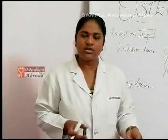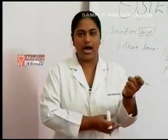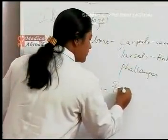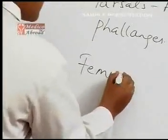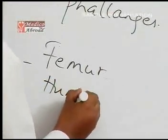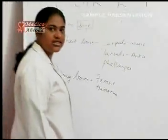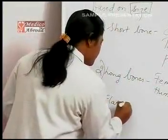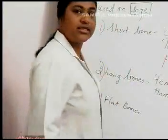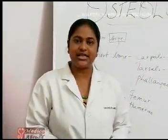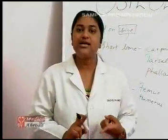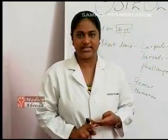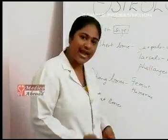You also have long bones like the radius and ulna in the forearm. Those are your long bones: femur, humerus, radius, ulna, etc. Next, you have flat bones. These are mostly bones present in the axial skeleton — for example, the skull, ribs, vertebral column, and pelvic girdle bones. All of them come under flat bones.